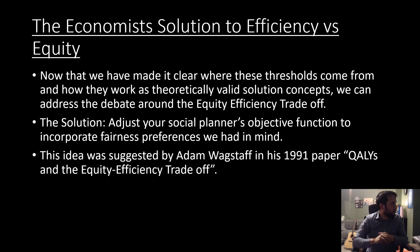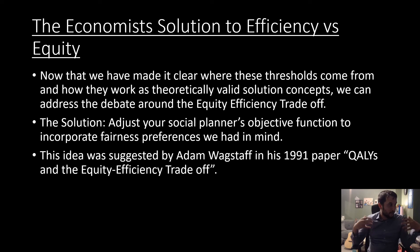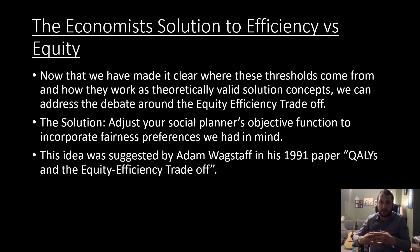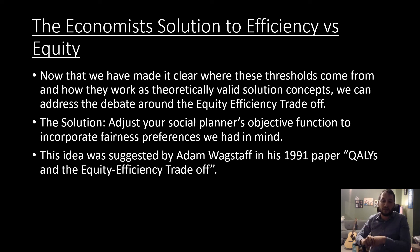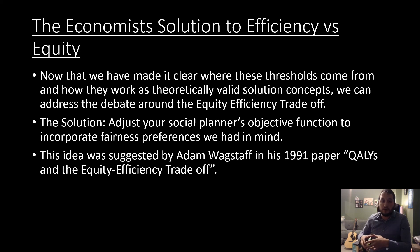So we saw those two things in terms of deriving our cost-effectiveness threshold, net monetary benefit, and net health benefits. Why is this useful? This addresses a very powerful argument which is debated a lot in public health circles and economic evaluation and health technology assessment circles about the equity-efficiency trade-off. The economist's solution to this problem is that we just need to adjust our objective planner's problem to match the objectives of how we see society or our benevolent social planner. It's just a matter of debate over what objective function to use, which means we're able to incorporate this idea of fairness into our problem.